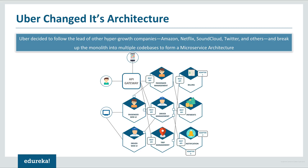This architecture helped Uber scale its services individually. The number of people searching for cabs is comparatively more than the number actually booking and making payments, so more processes run on the passenger management microservice than on the payments microservice. It was also observed that even if any one feature was down, no other microservice would get affected. Therefore, developers need not rebuild their applications even if one microservice goes down.